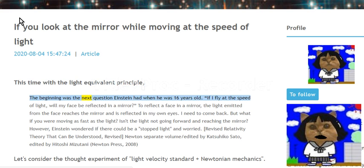The beginning was the next question Einstein had when he was 16 years old. If I fly at the speed of light, will my face be reflected in a mirror? To reflect a face in a mirror, the light emitted from the face reaches the mirror and is reflected in my own eyes. I need to come back. But what if you were moving as fast as the light?